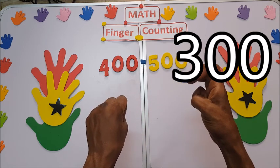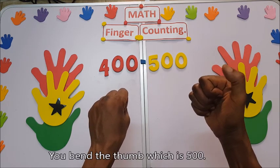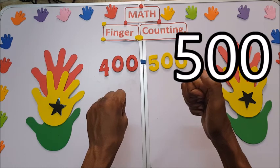300, 400. You bend the thumb, which is 500.